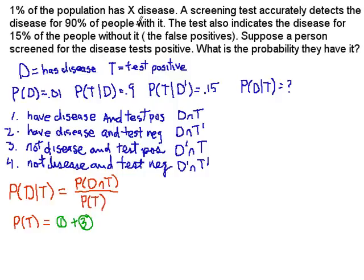We have a disease that's possessed by 1% of the population. There's a screening test which will test positive for 90% of the people that have the disease. But unfortunately, there are some false positives — namely, 15% of the people who don't have the disease will be identified as actually having it. What we want to do is determine the probability that if the test is positive, the person really has the disease. We set up designations of sets for people who have the disease and those who test positive, with probabilities given as conditional or outright probabilities, and we want to determine that probability.